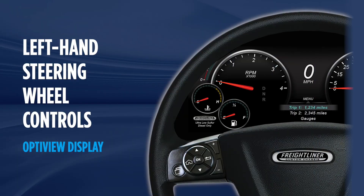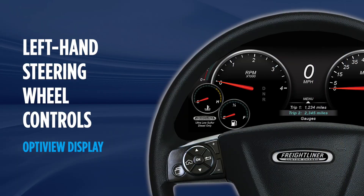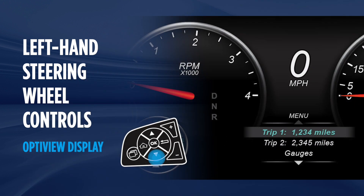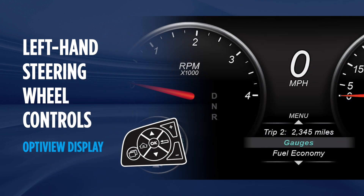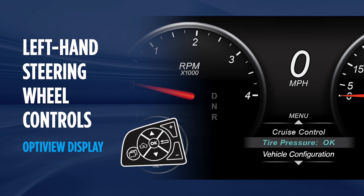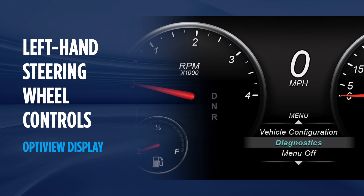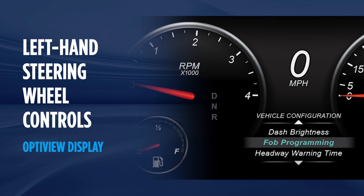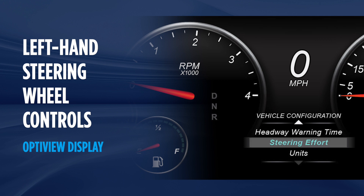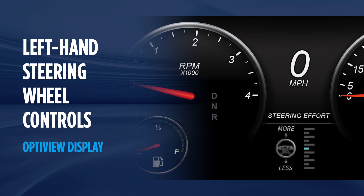You can also turn your phone or radio volume up and down. Use these controls to cycle through OptiView's extensive menu of coach data, including Trip 1 and Trip 2, Gauges, Fuel Economy, Tire Pressure, Vehicle Configuration, and Diagnostics. Two ways drivers can customize their experience is to set the dash brightness and change steering effort, available on select coaches, in the Vehicle Configuration menu.